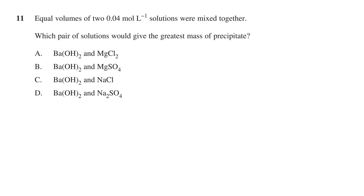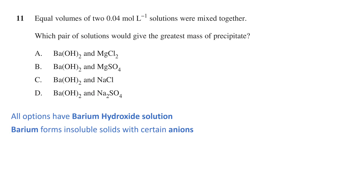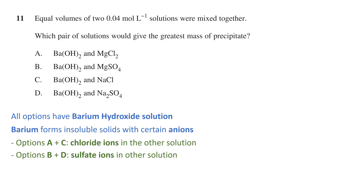We have four options: A. barium hydroxide and magnesium chloride, B. barium hydroxide and magnesium sulfate, C. barium hydroxide and sodium chloride, or D. barium hydroxide and sodium sulfate. All options have barium hydroxide solution as one of the two solutions mixed. Barium forms insoluble solids with certain anions. In options A and C we have chloride ions, while in options B and D we have sulfate ions.